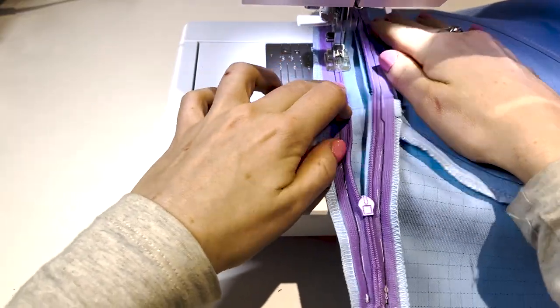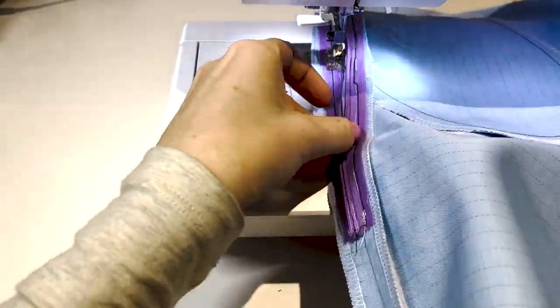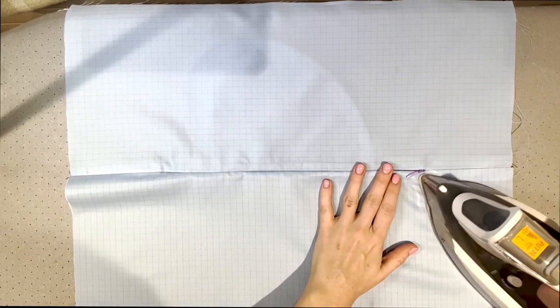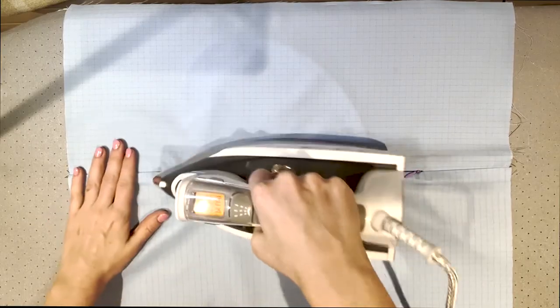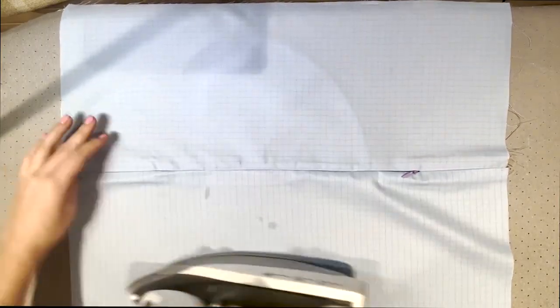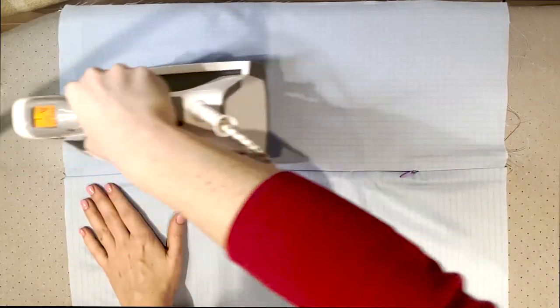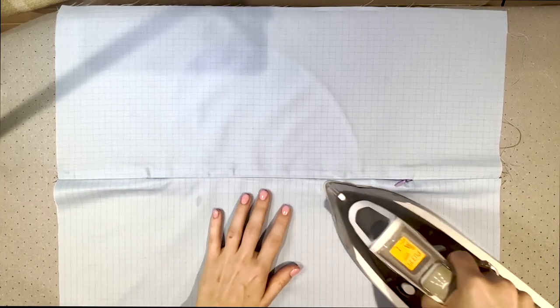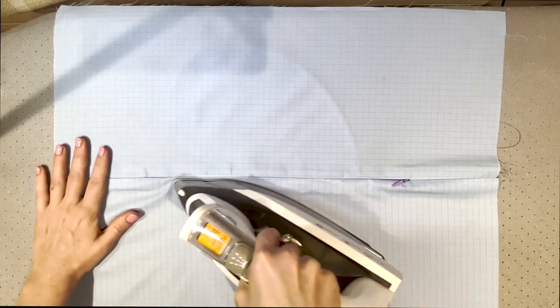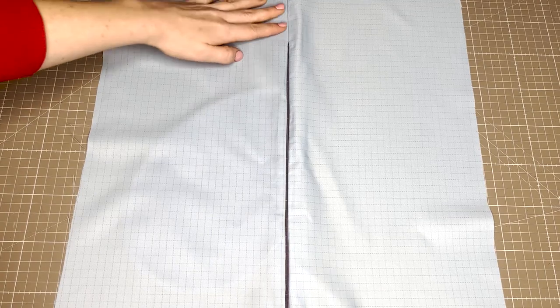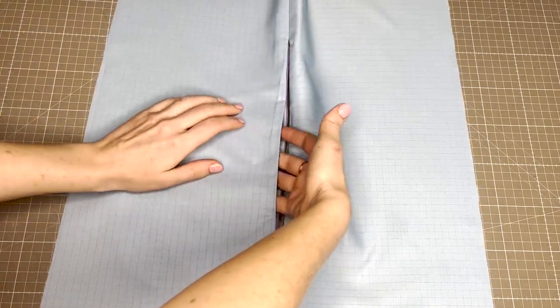Our previous row of stitches with the normal zipper foot has helped anchor this in place so that we can focus more on getting it at the edge here. Next take to your iron and press. Make sure the folds are nice and crisp in the middle. We now have a working invisible zipper with a pocket on the same seam.